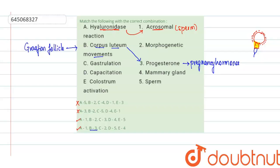So B can be matched to 3, and B is matched to 3 is given only in the last option, and the third option can also be ruled out. Now let us see the third one, that is gastrulation. Gastrulation is associated with the morphogenetic movements. Gastrulation is nothing but the movement of cells or the formation of the three different germ layers or the germ cells. C is matched to 2 and it is given in the last option.